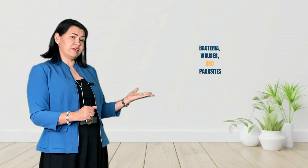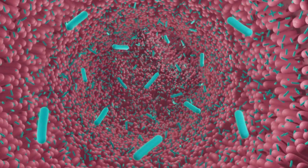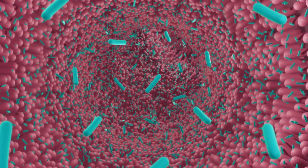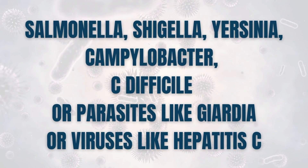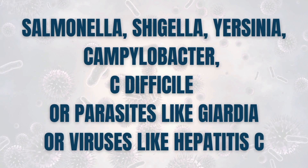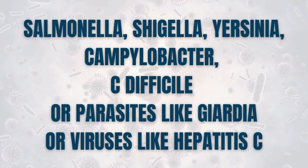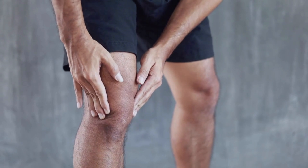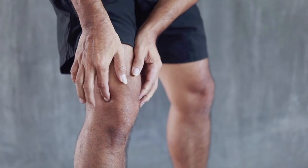Bacteria, viruses, and parasites that cause gut infections are also commonly known to cause reactive arthritis. Examples include Salmonella, Shigella, Yersinia, Campylobacter, Clostridium difficile, parasites like Giardia, or viruses like Hepatitis C. Patients who get a tick bite and are infected with Borrelia — the bacteria that causes Lyme disease — can also develop reactive arthritis. However, in 40% of cases, the infectious agent cannot be identified.